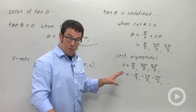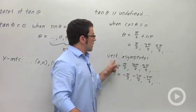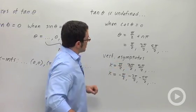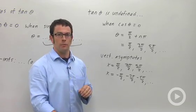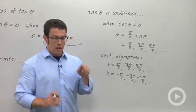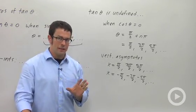If you're ever asked about the domain of the tangent function, since these are the places where tangent's undefined, you'd say all real numbers except these. If you're ever asked about the range of the tangent function, it's all real numbers. You can get any number out of the tangent function. Because remember tangent represents the slope of the terminal side of an angle on the unit circle. That can be anything.